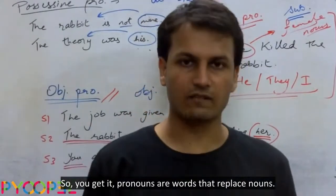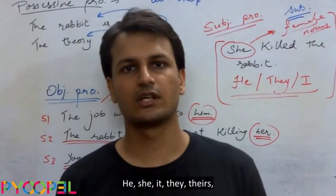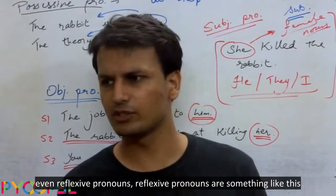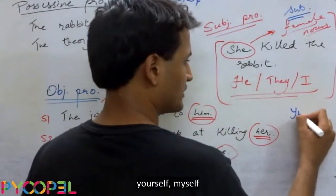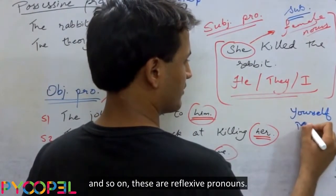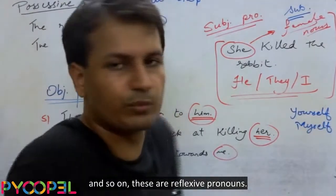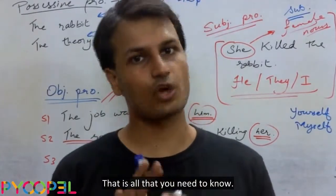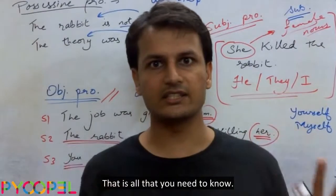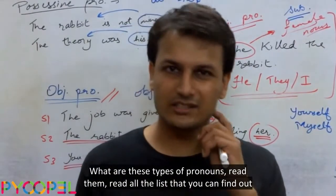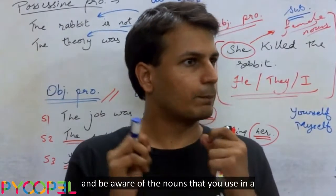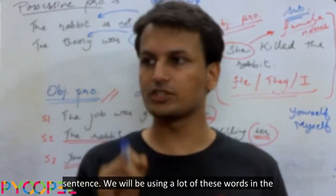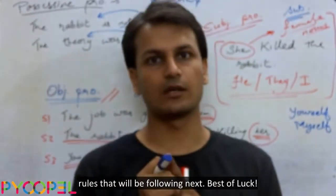So, to recap: in possessive pronouns you show ownership; in object pronouns things are done on them; and in subject pronouns they are the doers. Pronouns are words that replace nouns — he, she, it, they, theirs. Even reflexive pronouns like 'yourself' and 'myself' replace nouns in a sentence. Read all the lists you can find, and be aware of the nouns you use in a sentence. We will be using a lot of these words in the rules that follow next. Best of luck.